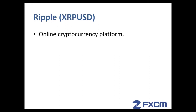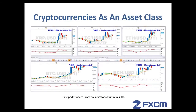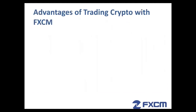Litecoin (LTCUSD) is an open source decentralized digital currency. It was created in 2011 using code from a Bitcoin client. And last but not least is Ripple (XRPUSD). This is an online cryptocurrency platform, but unlike the other cryptos, Ripple's target audience is traditional banking institutions. It's used to settle cross-border and cross-bank transactions in a transparent manner.